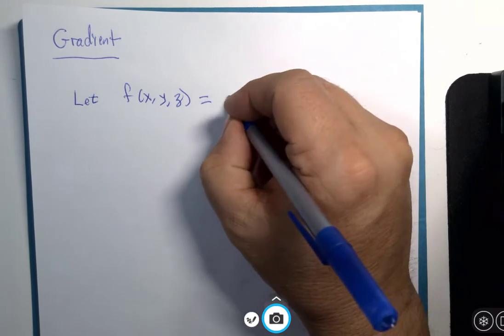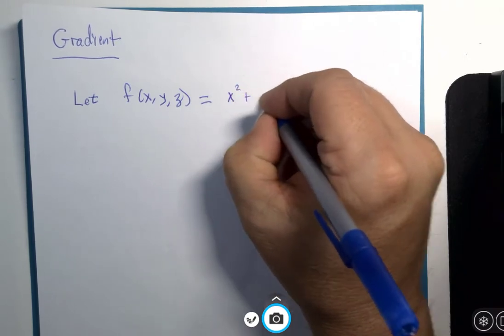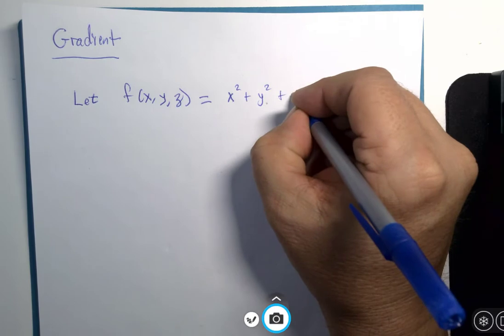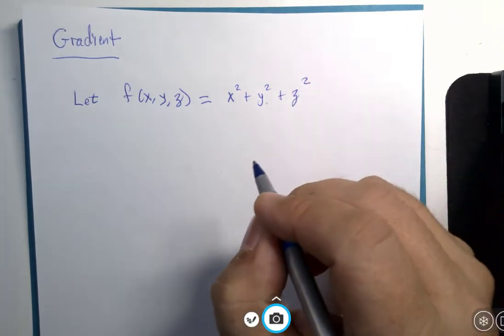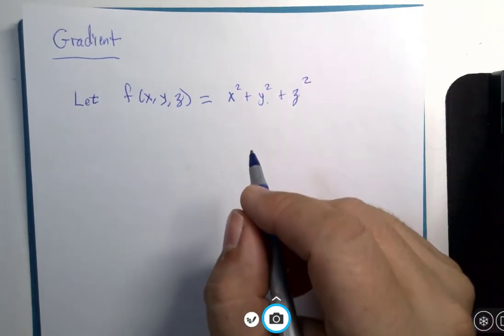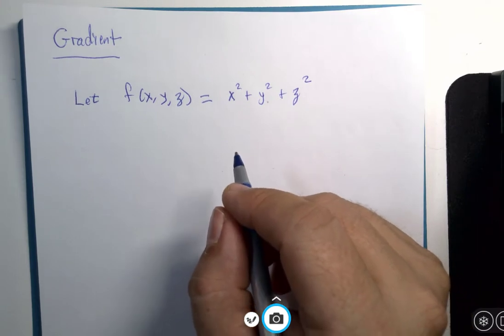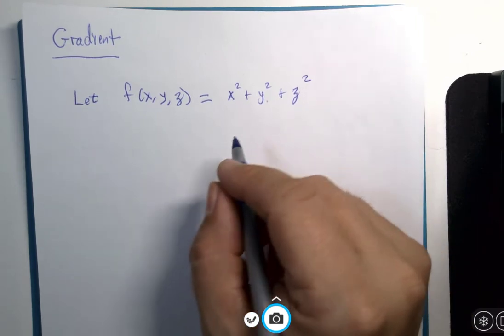So, f of x, y, z is x squared plus y squared plus z squared. And what we're going to do is we're going to use the gradient to find the normal vector again, but in a three variable case.